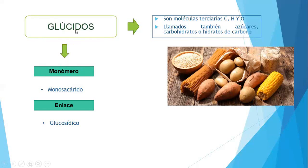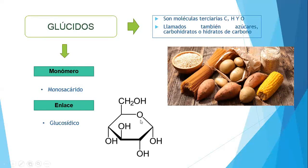La parte más pequeña de un glúcido se llama monosacárido. Cuando un monosacárido quiere juntarse con otro, tiene un enlace. Esta glucosa viene a ser un glúcido, un carbohidrato, un hidrato de carbono — es un monosacárido. Si esta glucosa quiere unirse con otra glucosa, se va a unir mediante un enlace llamado glucosídico. El monómero es un monosacárido y su enlace es el enlace glucosídico. Los glúcidos podemos encontrarlos en alimentos como papas, arroz y pastas.